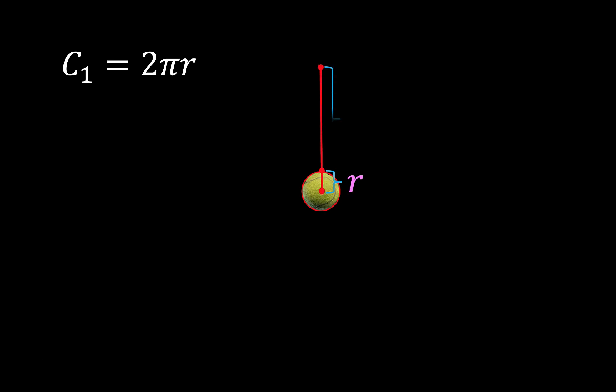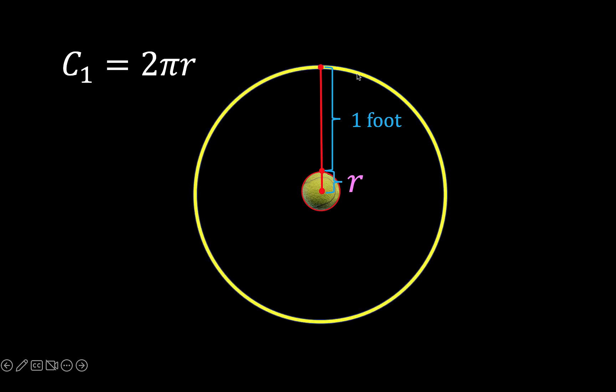Next, let's increase the radius by one foot and draw a circle around the tennis ball. The result is this yellow circle. Its radius is R plus one foot also.